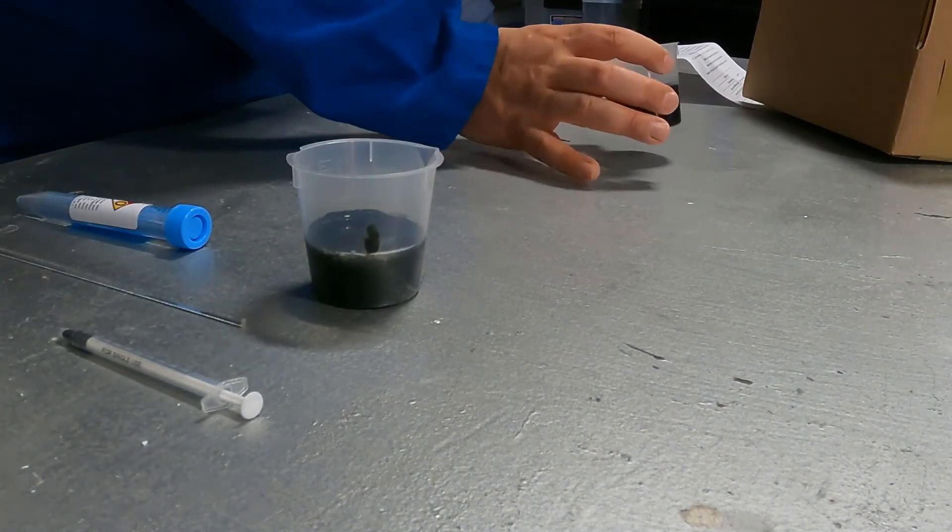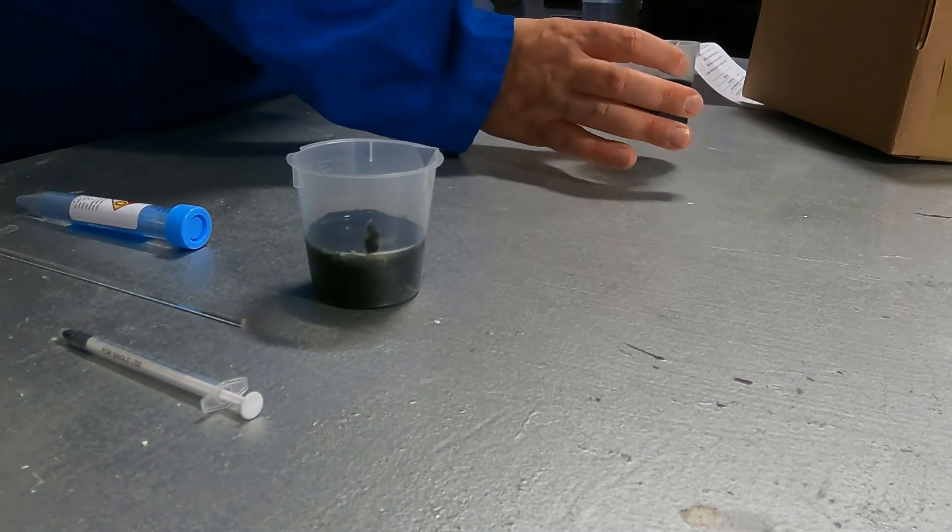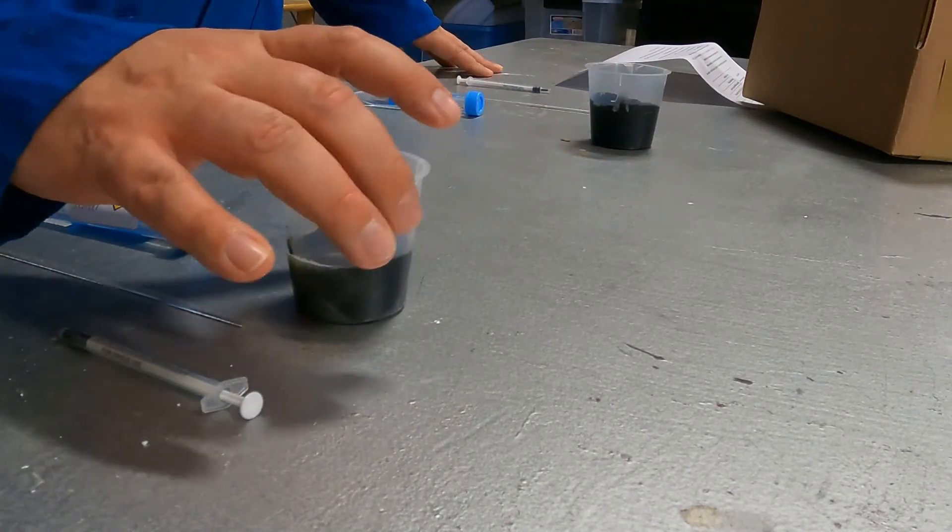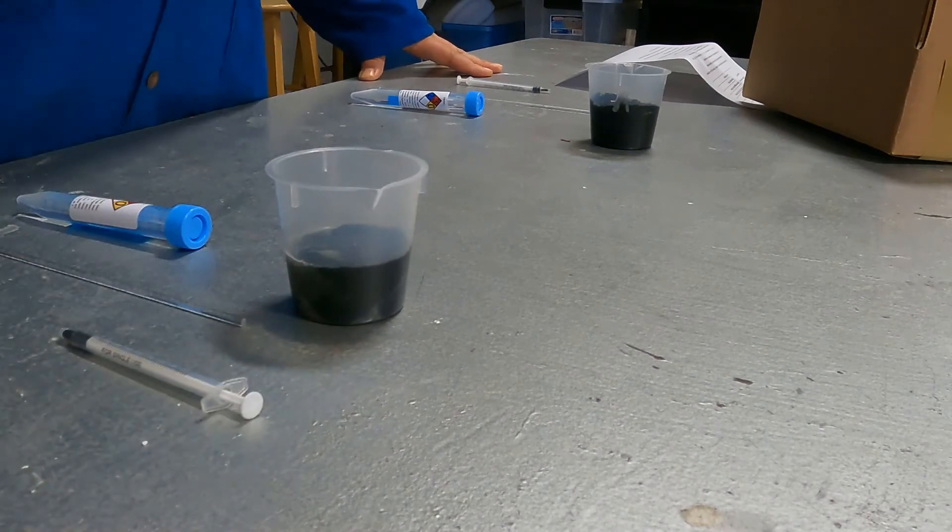As you can see, it's a very viscous black liquid. That is what it should look like. And it's probably what you're used to if you've used our Etch in the past.